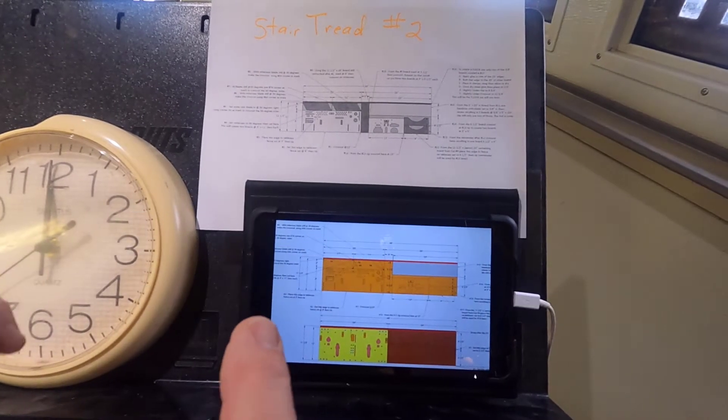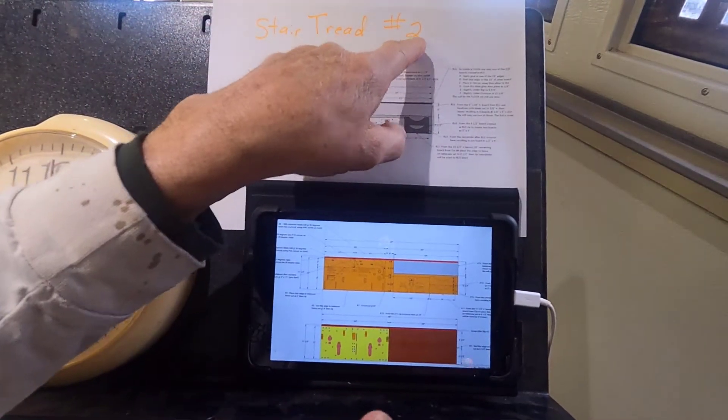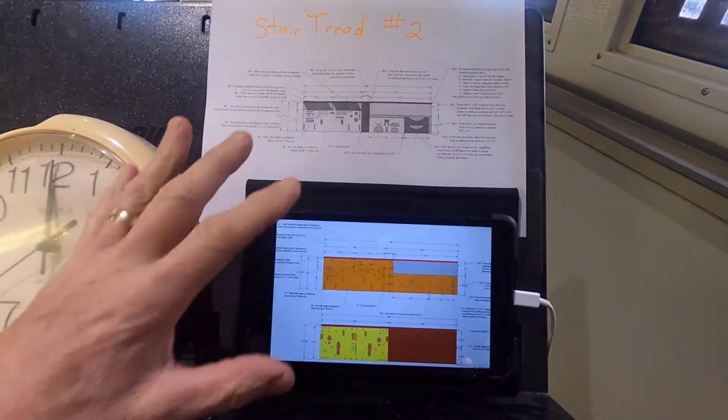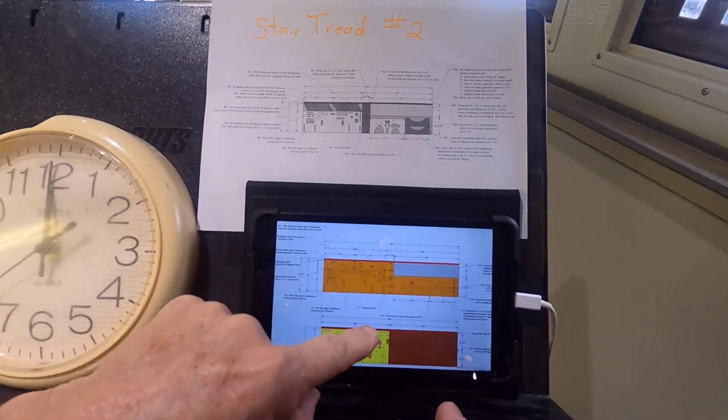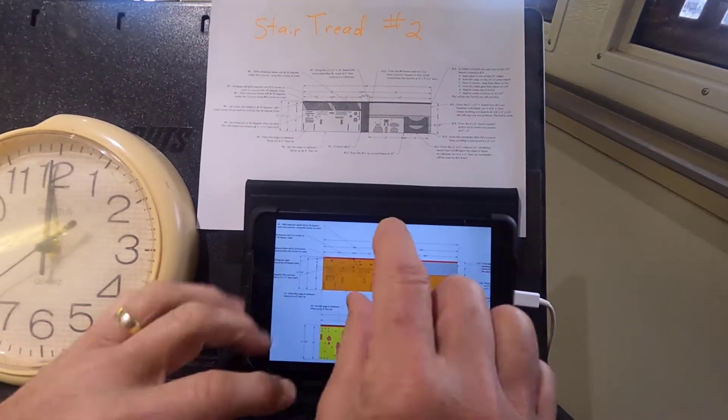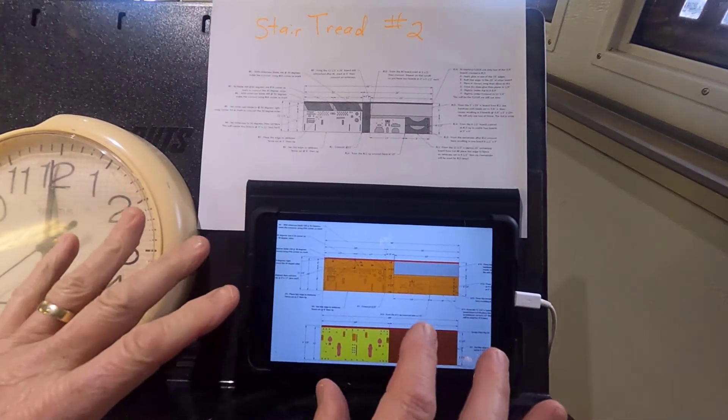Okay, so now we're going to cut a board into stair tread number two. This one's got a lot going on. Here's the drawings. I'm on an eight inch Android device and I'm using SketchUp Viewer.